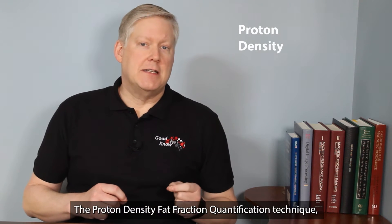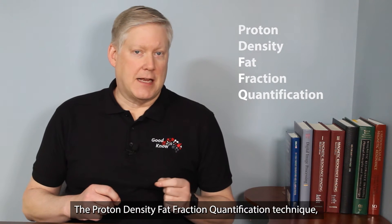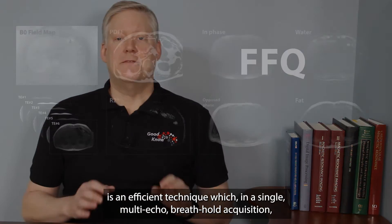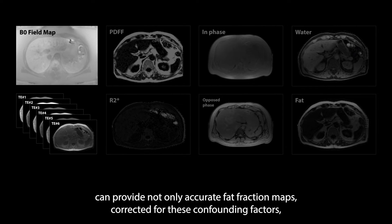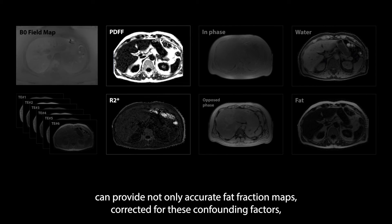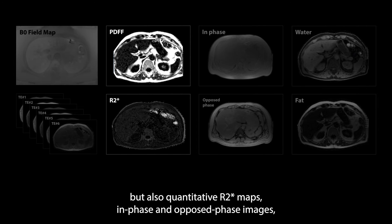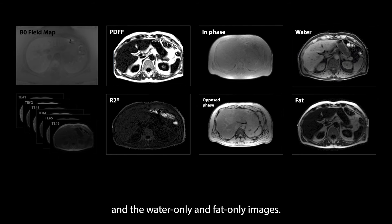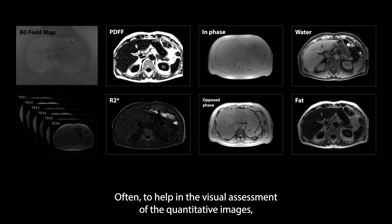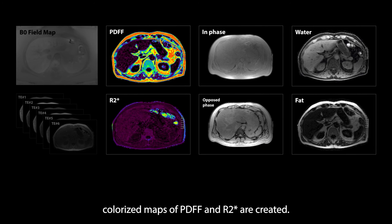The proton density fat fraction quantification technique, or FFQ for short, is an efficient technique which, in a single multi-echo breath hold acquisition, can provide not only accurate fat fraction maps corrected for these confounding factors, but also quantitative R2 star maps, in-phase and opposed-phase images, and the water-only and fat-only images. Often, to help in the visual assessment of the quantitative images, colorized maps of PDFF and R2 star are created.